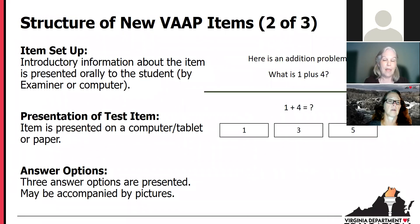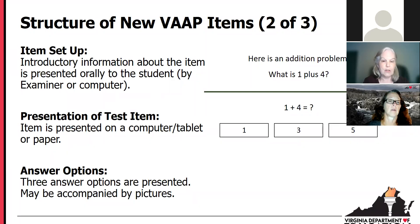Let's go on to a math item. Again, similar structure. There's the item setup: 'Here is an addition problem. What is one plus four?' The test item itself: 'One plus four equals.' And then the options: one, three, five. Similar structure regardless of content.